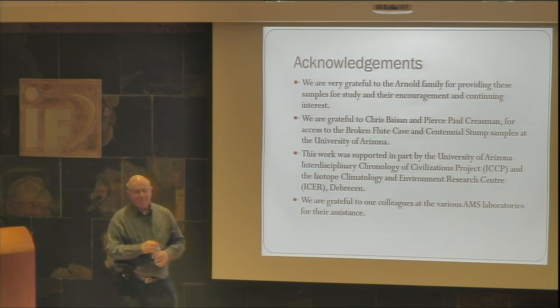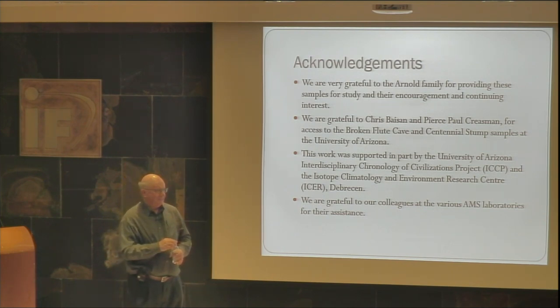Comment: One important difference between Libby's measurements and current ones is the error bar — going down from 600 to 20 years. Yes, that's a huge difference — that's where the technology comes in. We can now count up to a million carbon-14 atoms if we have enough sample. Counting the equivalent statistics with beta decays would take several weeks with 10 grams of sample. To date the Shroud of Turin by beta counting, you'd need the whole shroud or a large piece of it.